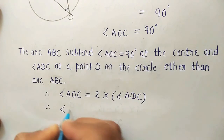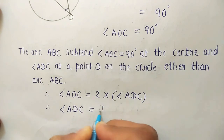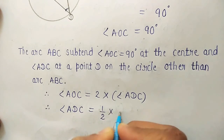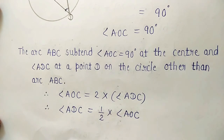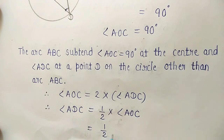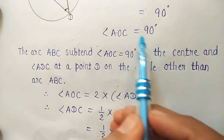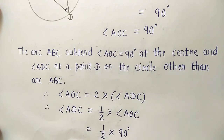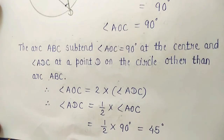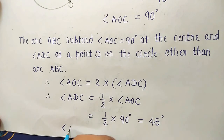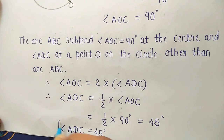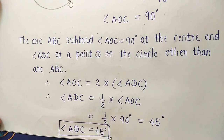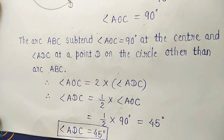We want to find the value of angle ADC. So, it will be equal to half of angle AOC. This 2 in multiplication goes to the denominator on the left-hand side. Half of angle AOC: the value is 90 degrees. So, this will be 90 divided by 2, which is 45 degrees. So, angle ADC is 45 degrees. We were asked to find the value of angle ADC, and here we completed question 1.